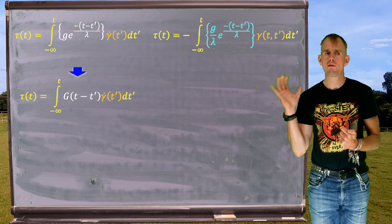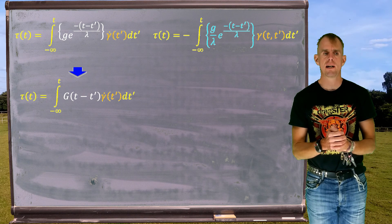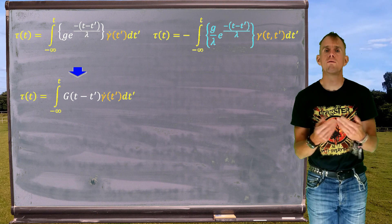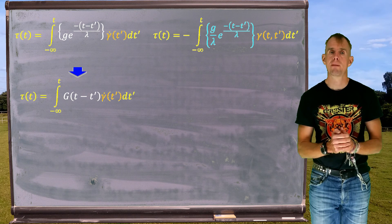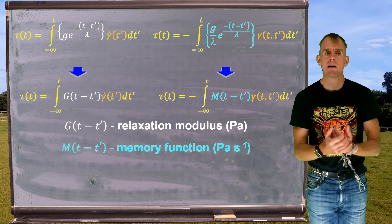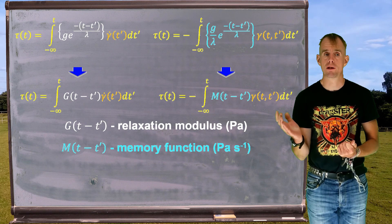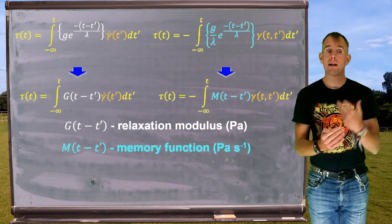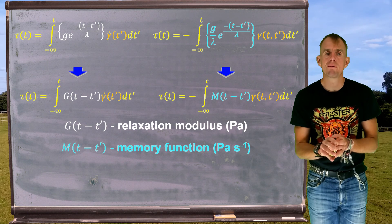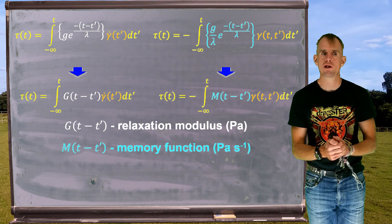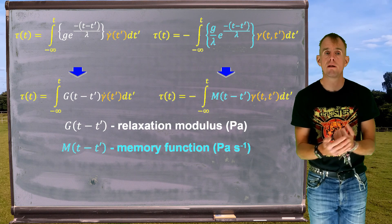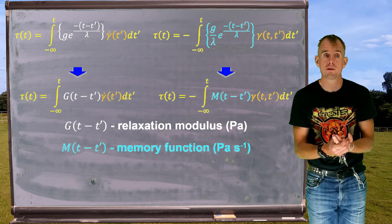So what we can do is define a material function within an integral and write it with respect to a deformation. Looking at the equation with respect to past strain rate, a general version involves something called G of t minus t-prime. G of t minus t-prime is entirely a material property — it's what we're going to call a relaxation modulus. For integral Maxwell with respect to past strain, we can write an expression that is entirely material related: M of t minus t-prime, which is something I'm going to call a memory function. On the board, we have that relaxation modulus and that memory function written explicitly for Maxwell. When we add in additional physical models to these equations, they will be in addition to the relaxation modulus or the memory function.